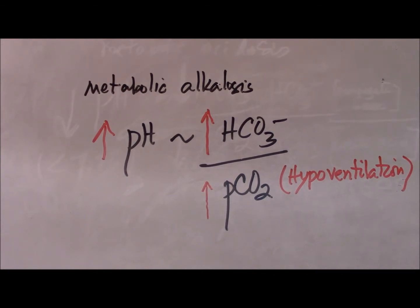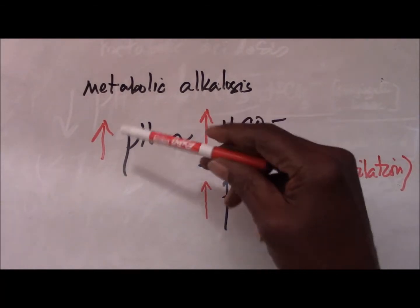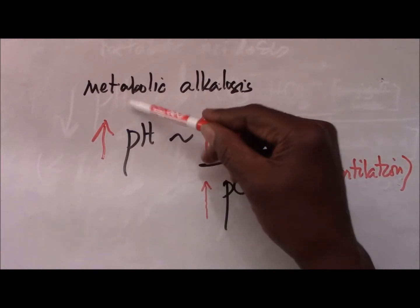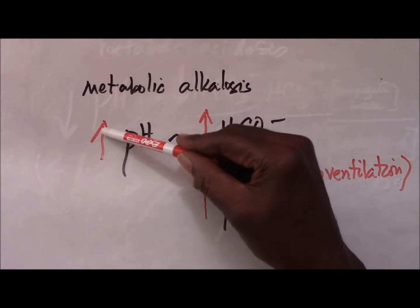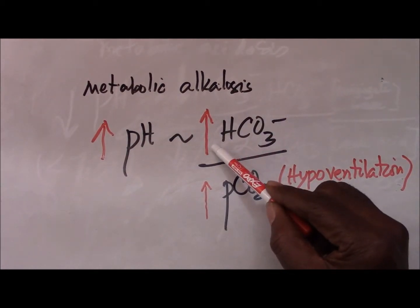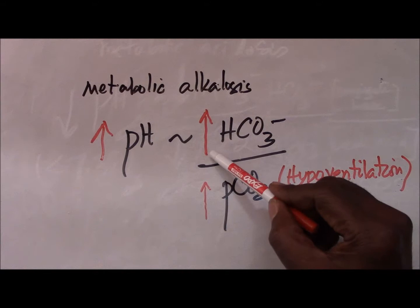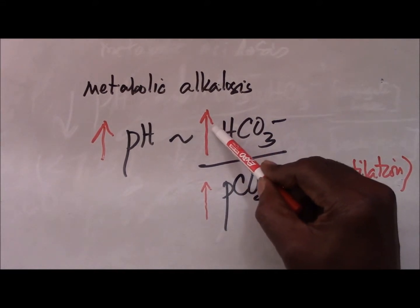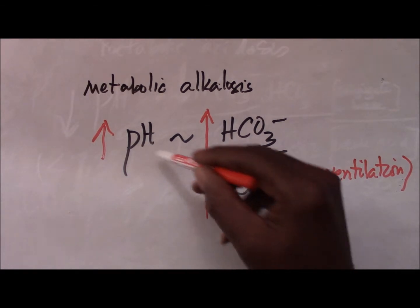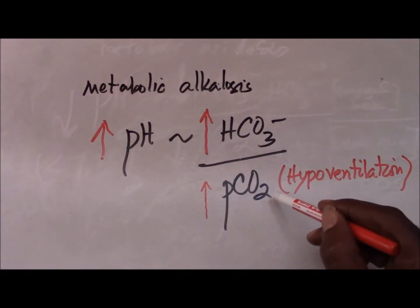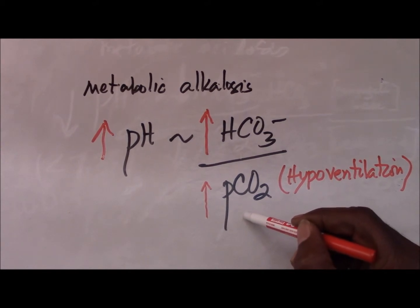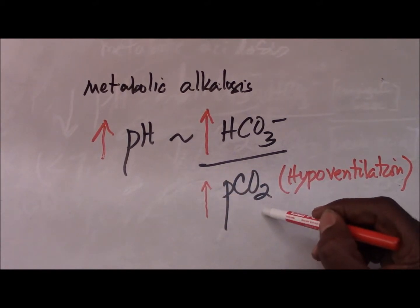It is important to first ask the question: is the pH increasing or decreasing? In this case of metabolic alkalosis, the pH is increasing. This is a primary event in which there is a gain in the bicarbonate ion concentration. The body attempts to restore the pH to normal by also increasing the partial pressure of carbon dioxide — that is a compensatory response.